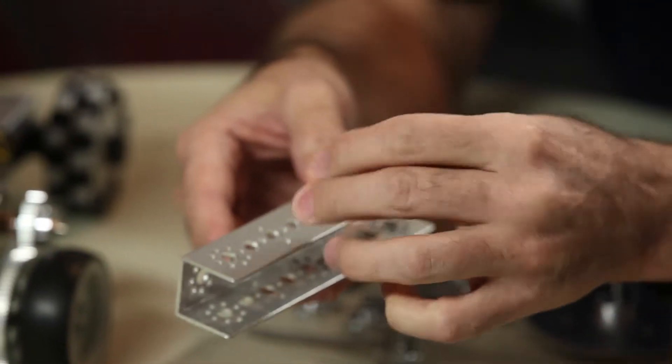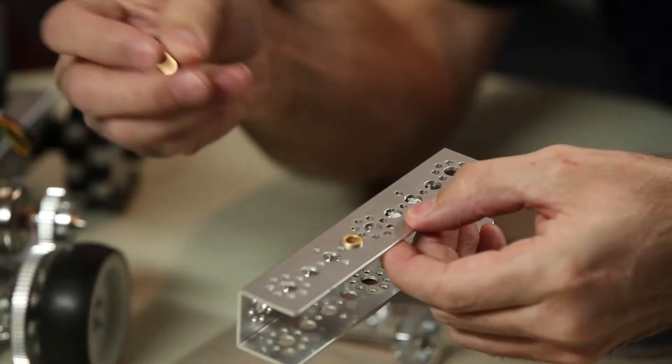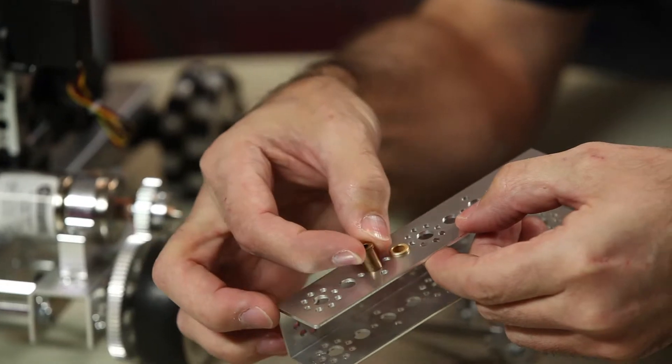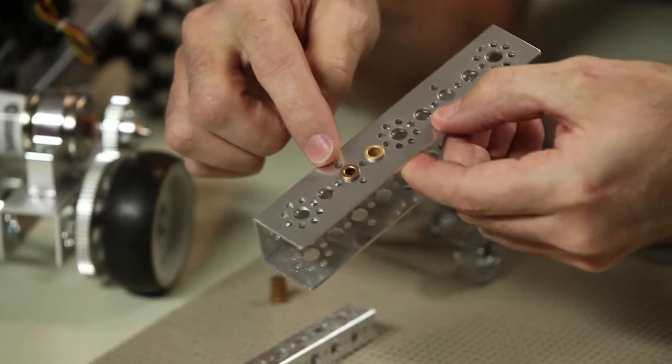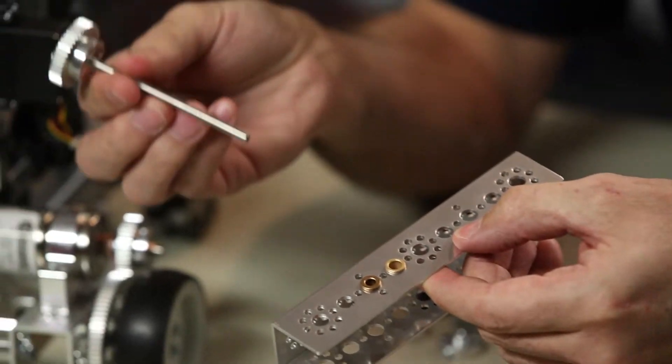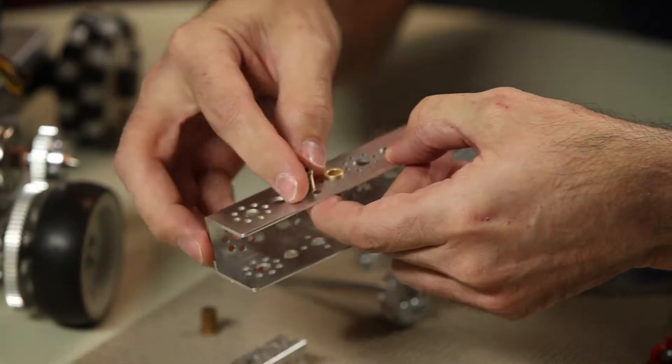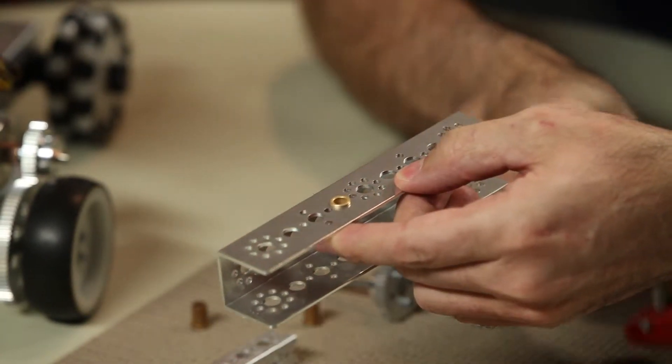Prime has a larger interior diameter on their bushings for the larger Prime axle, where the Max bushings has a smaller ID interior diameter for the Tetrix Max axles. So that's going to be the key when you start combining these.